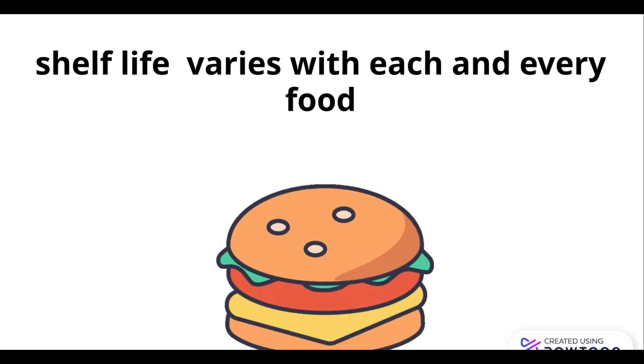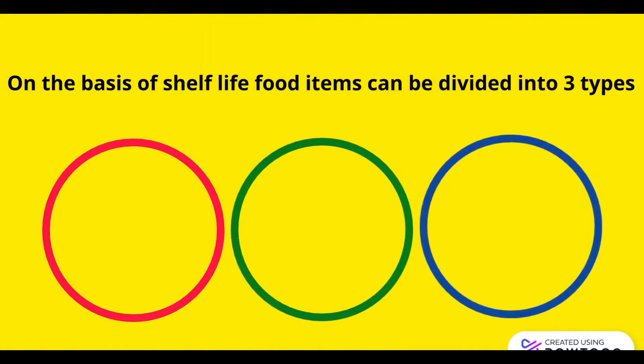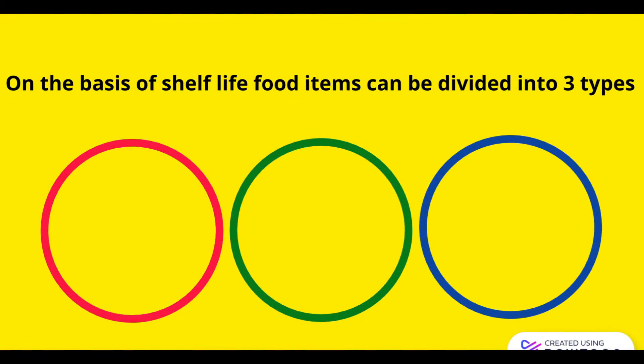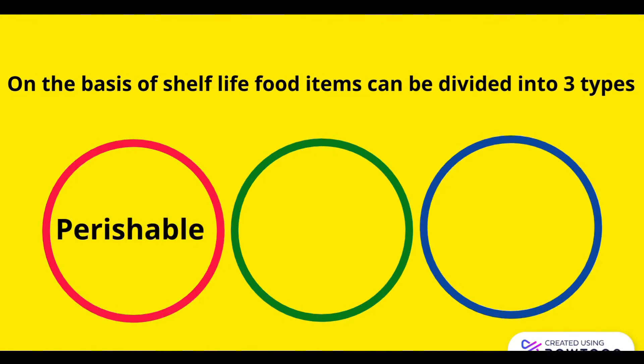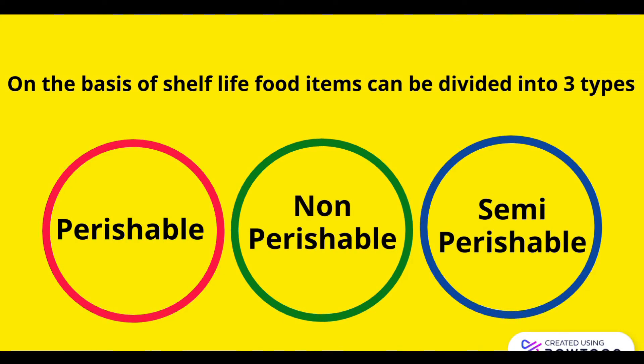So, on the basis of shelf life, food items can be divided into three types: perishable food product, non-perishable food product, and semi-perishable food product.